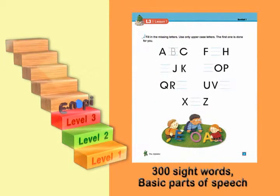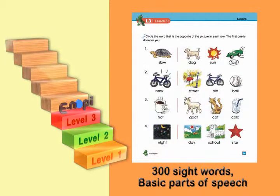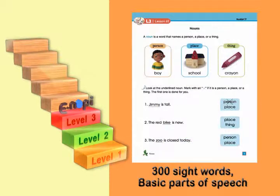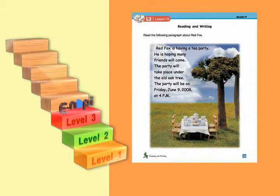In level 3, students learn to recognize and name all capital and lowercase letters of the alphabet and enlarge their vocabulary by learning synonyms, antonyms, compound words, and 300 sight words. They also learn the basic elements of sentences, such as nouns, verbs, and adjectives, and their applications.